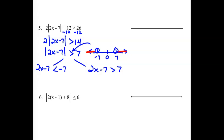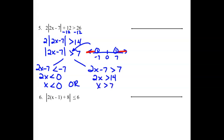Solving the first: adding 7 over gives 2x less than 0, and dividing gives x less than 0. On the other side, adding 7 gives 14, and dividing gives x greater than 7. On our graph, we need a 0 and a 7. For greater than 7, open circle and an arrow going right. For less than 0, open circle and an arrow going left.